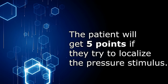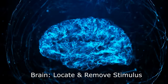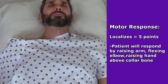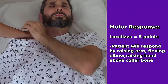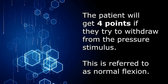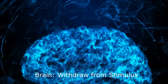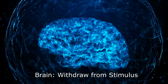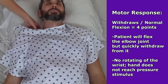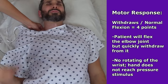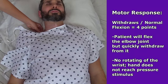Five points if the patient tries to localize the pressure stimulus — the brain is trying to locate and remove it. When you do the trapezius squeeze, the patient's arm bends at the elbow and moves up above the collarbone trying to remove that pain. Four points if the patient tries to withdraw from the pressure stimulus — referred to as normal flexion. The brain is trying to withdraw from the painful stimulus rather than locate it. With the trapezius squeeze, the patient flexes and bends the elbow but quickly withdraws, with no rotation of the wrist, and the hand never reaches up to the collarbone.